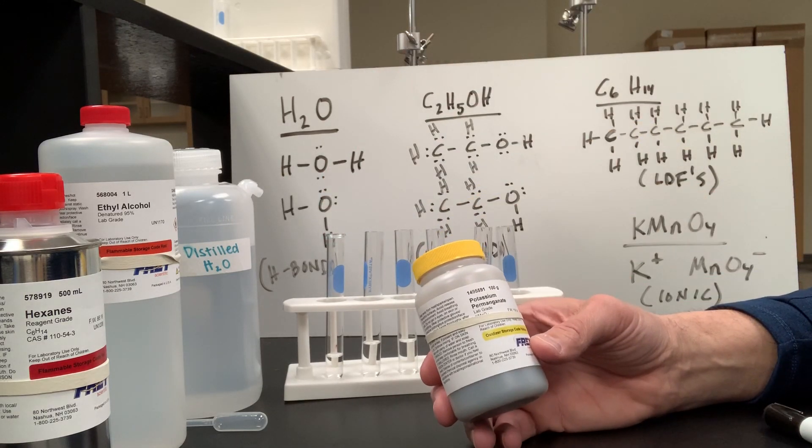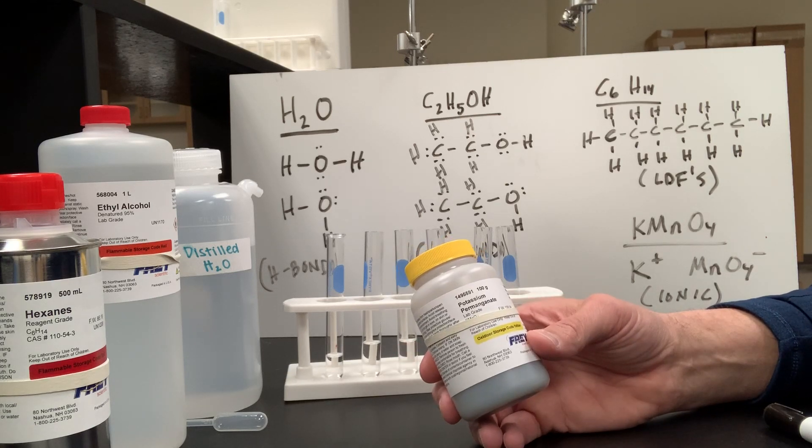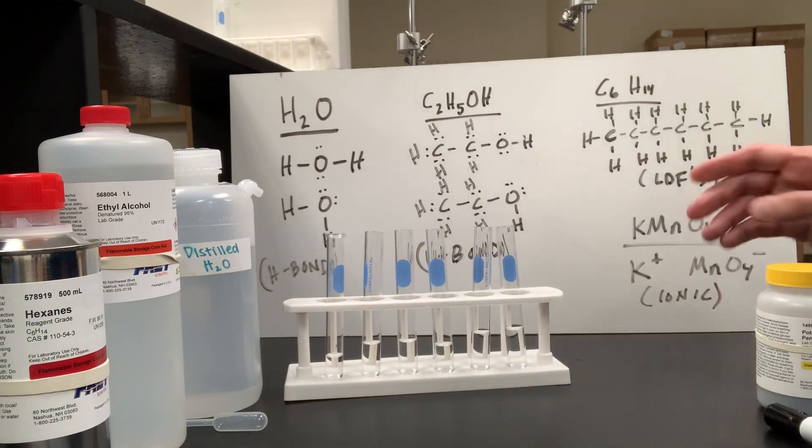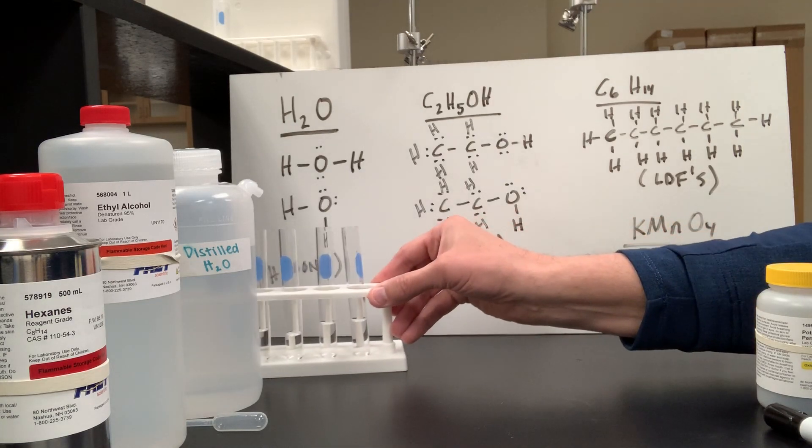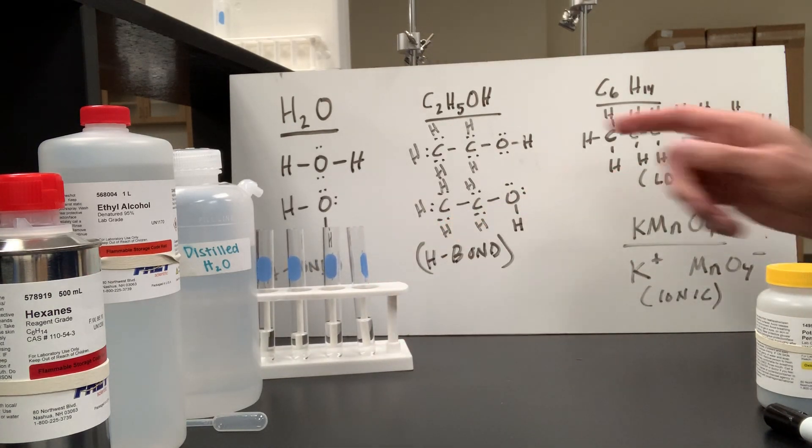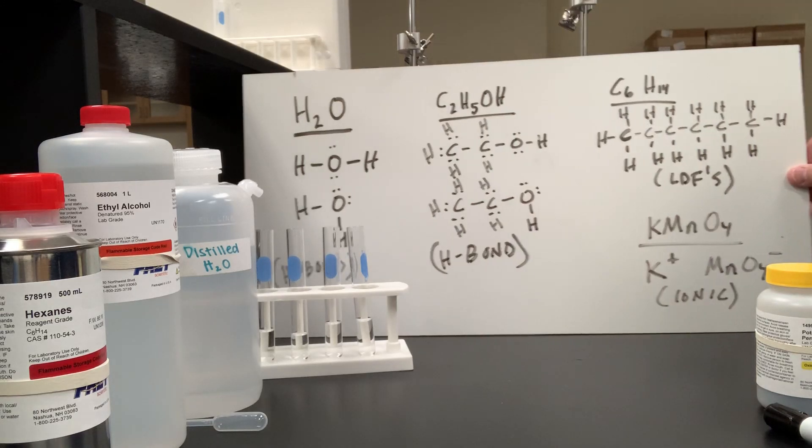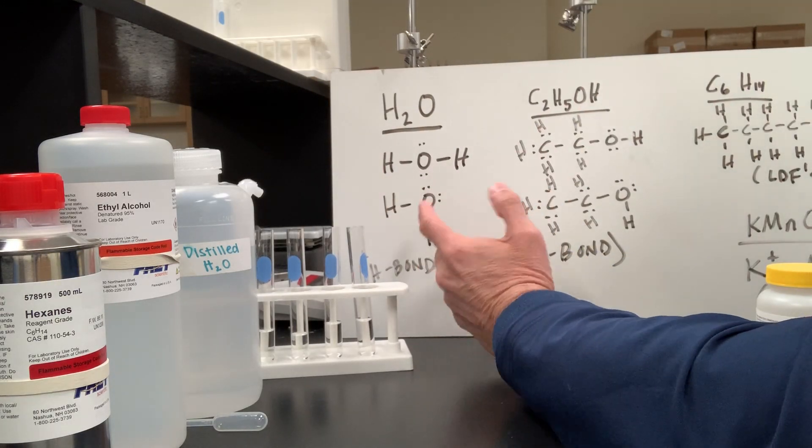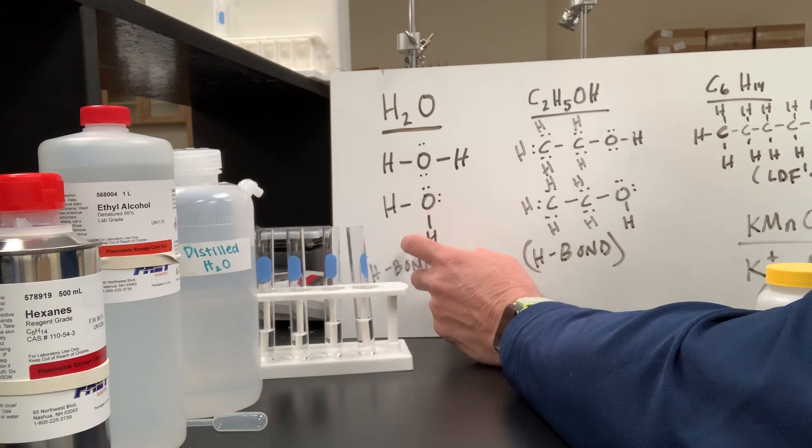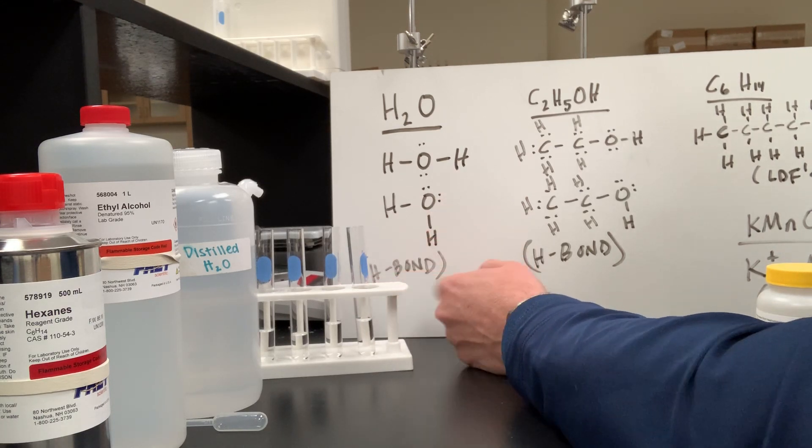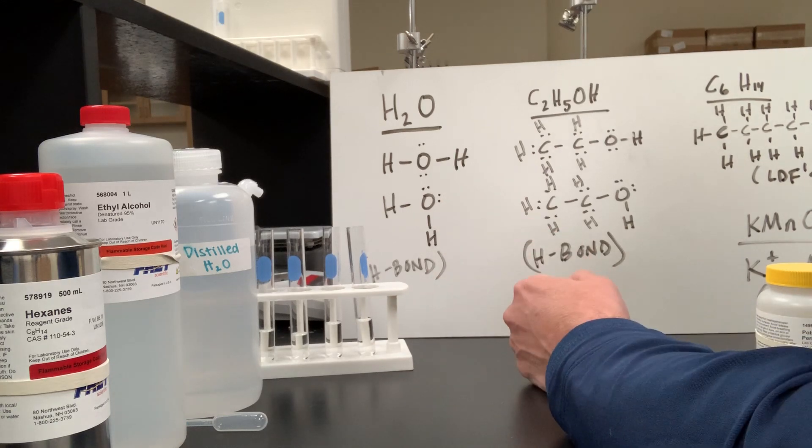I also have an ionic salt, potassium permanganate. Now let me show you the Lewis structures for each of these substances. Of course, water is a covalent compound. It is bent, and as such, it has a negative end and a positive end, and it can also hydrogen bond. We have hydrogen bonded to oxygen here.